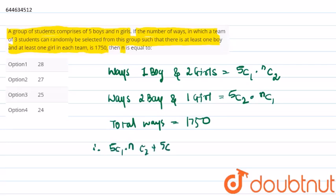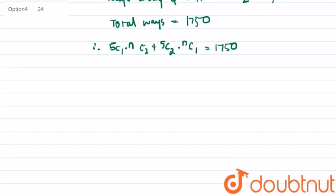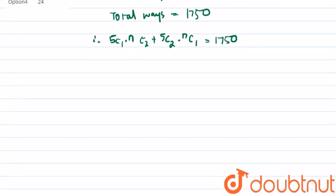Therefore, by evaluating: 5 into n into (n minus 1) upon 2 plus 5 into 4 upon 2 into n equal to 1750.